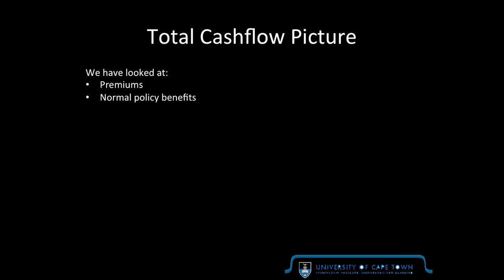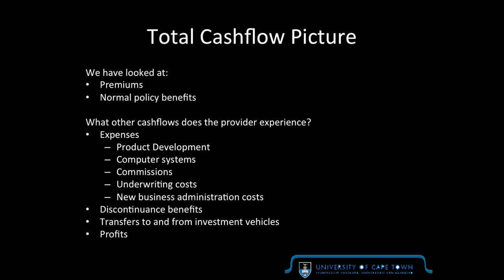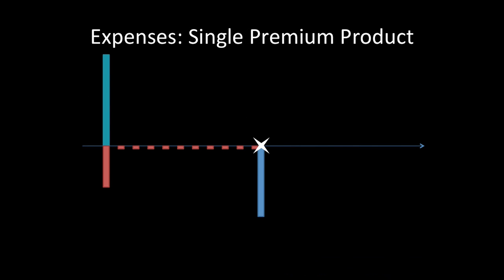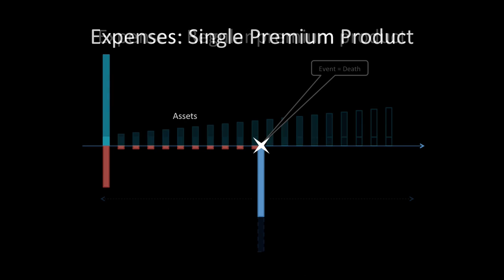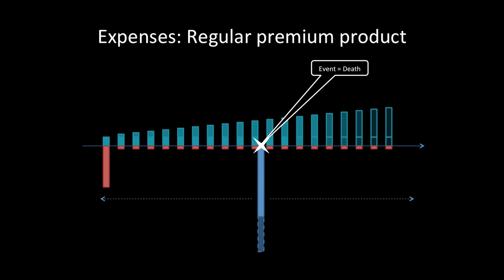We've looked at premiums, normal policy benefits. What other cash flows does the provider experience? Well, it's got all those expenses - product development, computer systems, etc., discontinuance benefits, transfers to and from investment vehicles, and profits. Like I said, this is a foundation chapter, so just have a general overview of it. And remember, expenses will be the negative cash flows.